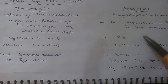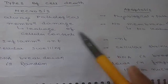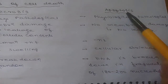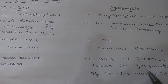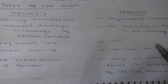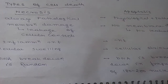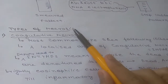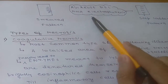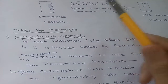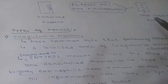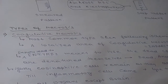In necrosis, cellular swelling occurs; in apoptosis, cellular shrinkage occurs. In necrosis, DNA breakdown is random, but in apoptosis DNA is broken down into fragments of 180 to 200 base pairs. If you do agarose gel electrophoresis on necrotic cells you will find a smeared pattern, and a ladder pattern in apoptosis.